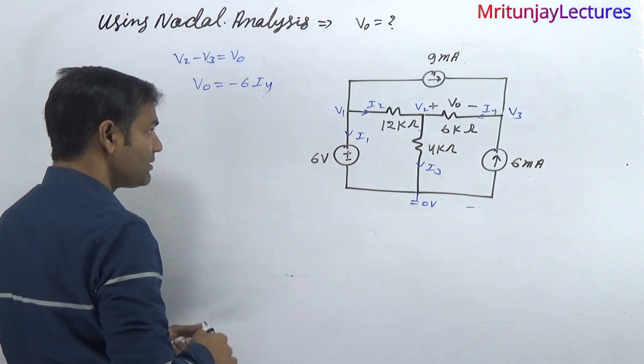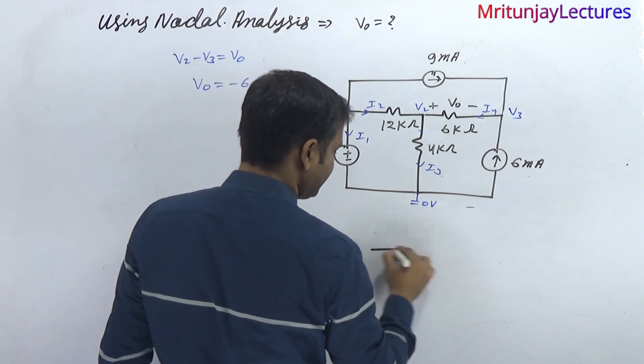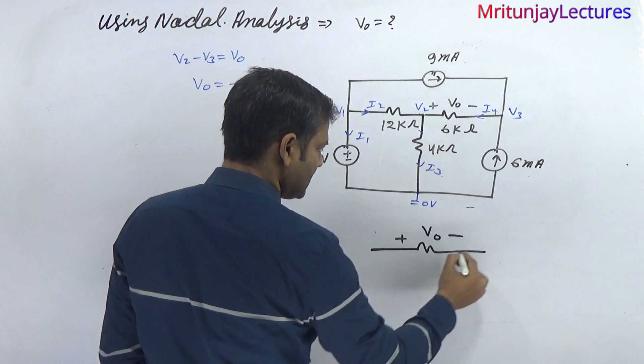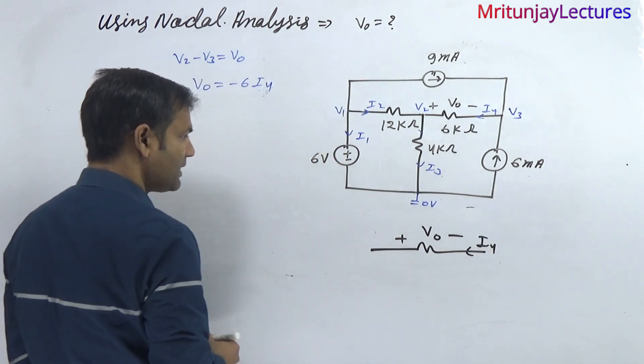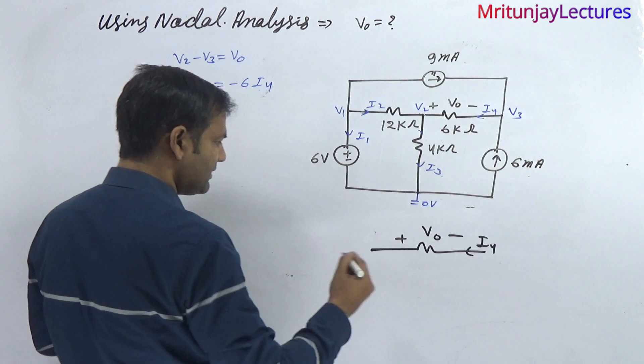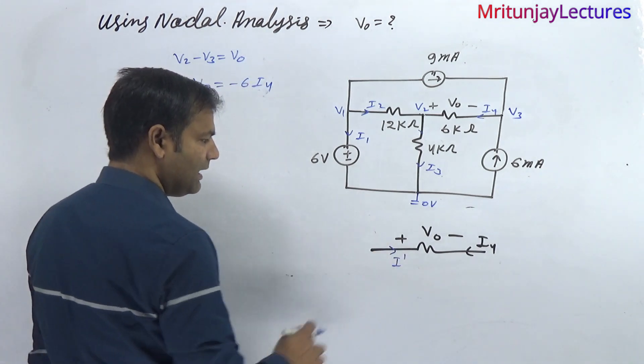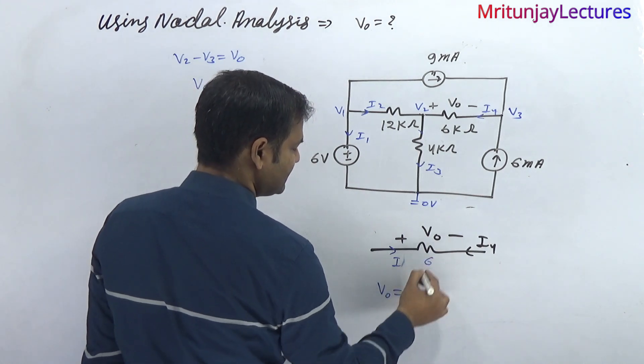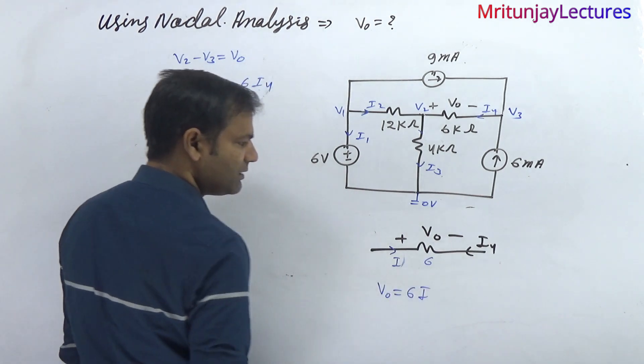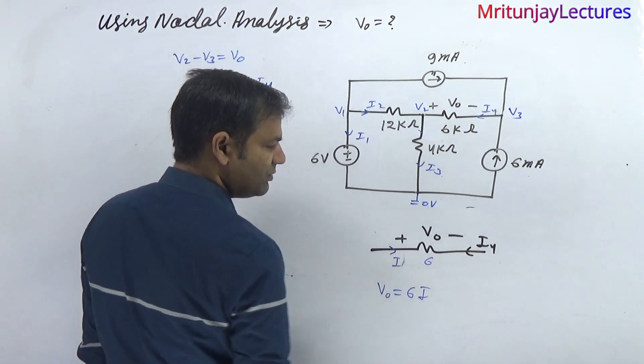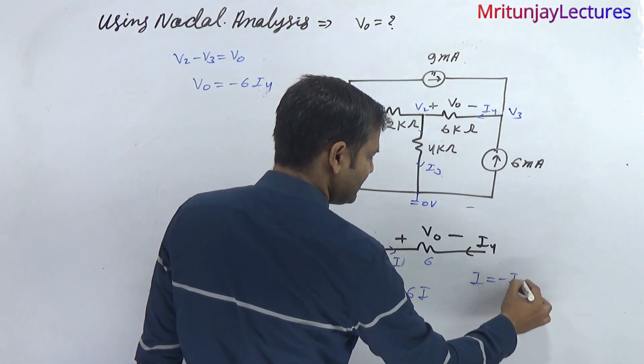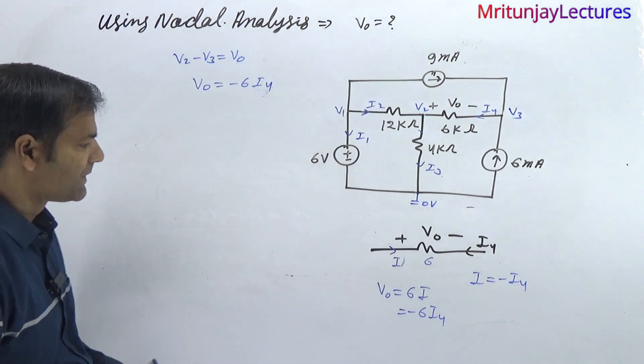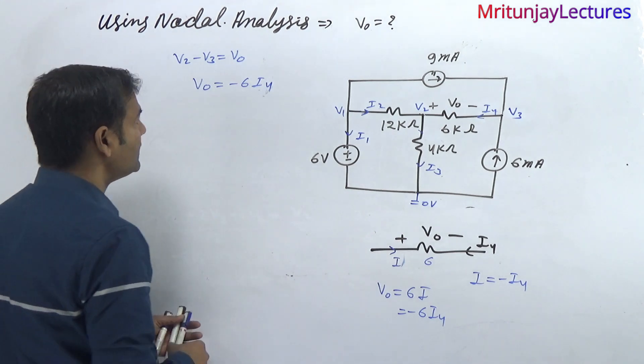Why minus? If you consider the plus-minus convention for V naught and the actual current direction I4, when you consider current I, V naught equals 6 times I. But I equals minus I4, so it is written as minus 6I4. Clear?